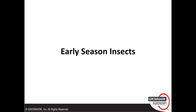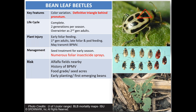We're going to be reviewing some of the early season insects, talking a little bit about their identification and some of the management tools available. Bean leaf beetles are probably one of the most common pests of soybeans we encounter early on. They have a pretty wide color variation — some might be yellow, orange, or red, with or without spots. The one key characteristic to distinguish bean leaf beetles from other beetles is the presence of black triangles behind their pronotum or thorax. That black triangle is present on every single bean leaf beetle regardless of color variation.